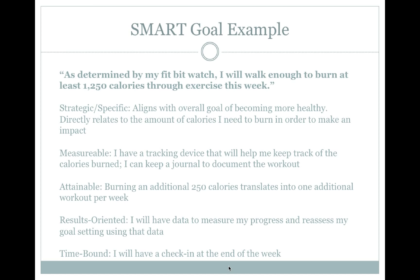Our SMART goal might look something like this: As determined by my Fitbit watch, I will walk enough to burn at least 1,250 calories through exercise this week. This goal is both strategic and specific — it aligns with the overall goal of becoming healthy and the amount of calories needed to burn directly relates to me. This goal is measurable through a tracking device and an exercise journal. Burning an additional 250 calories per week is equivalent to adding one more workout, making the goal attainable. At the end of the set time frame, there will be concrete data to analyze and determine the goal's progress, making it a results-oriented goal. And finally, this short-term goal will have a check-in at the end of the week.